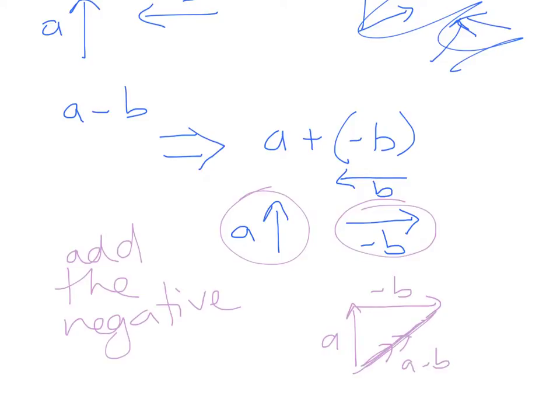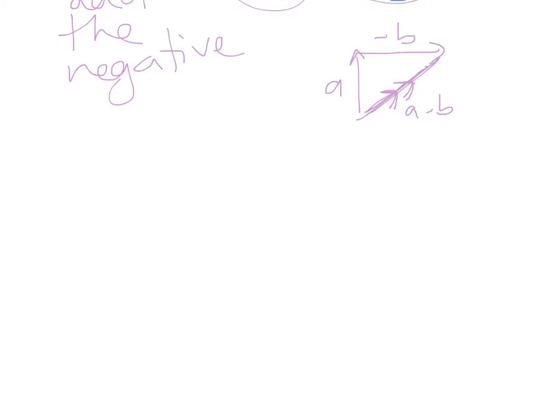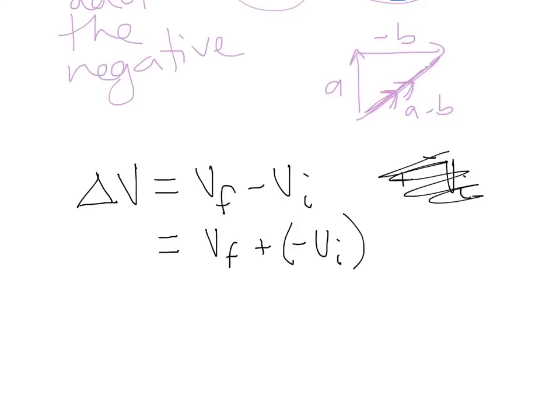Giving a more concrete example, change in a vector quantity, let's say the change in velocity. Change in anything is the final minus the initial. Change in velocity is final velocity minus the initial velocity. Because we can't do this as a vector subtraction, we have to add the negative. So change in velocity is final plus the negative of the initial.